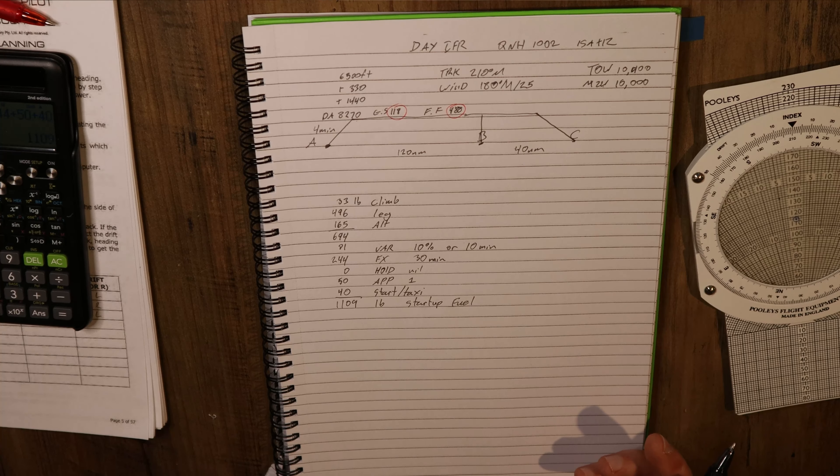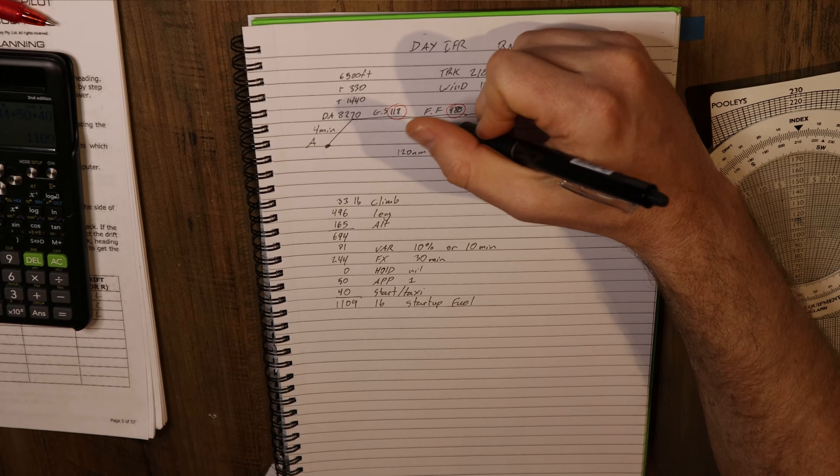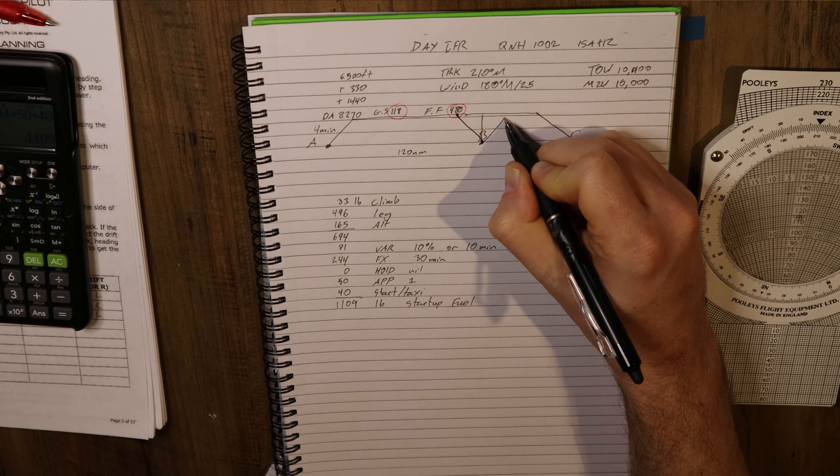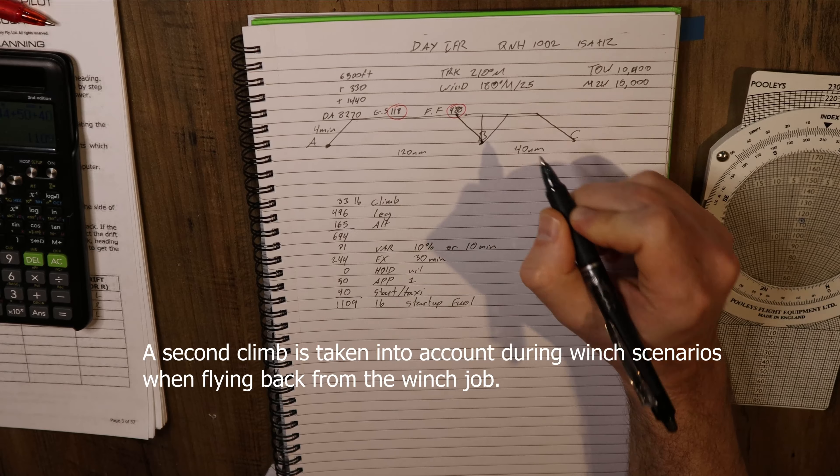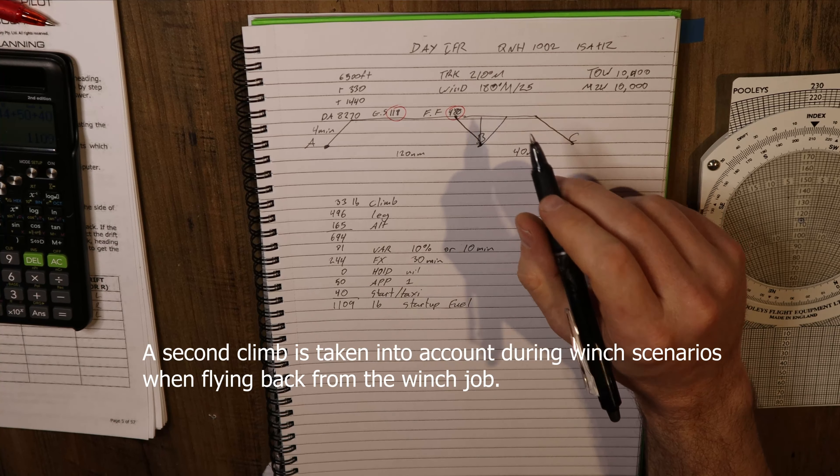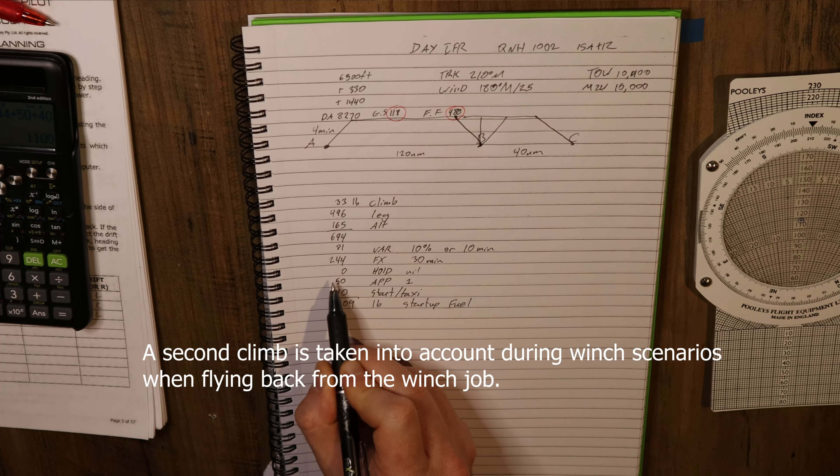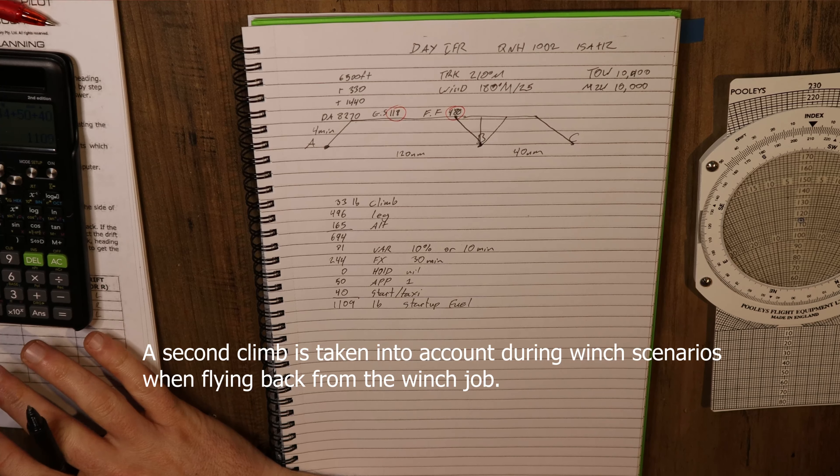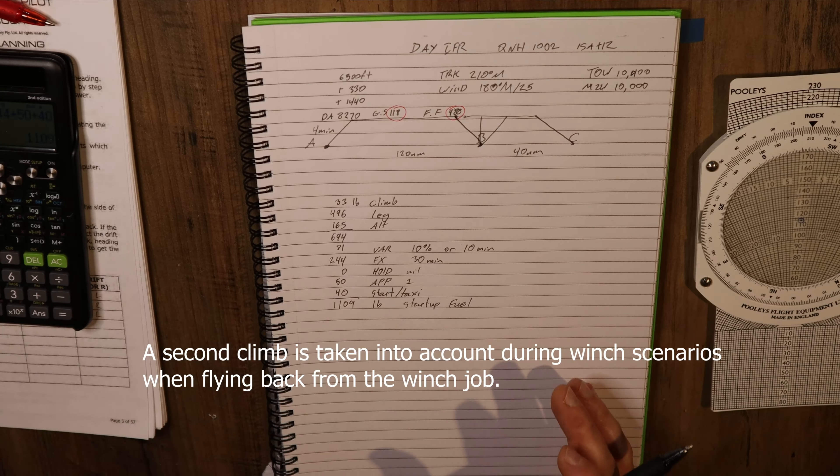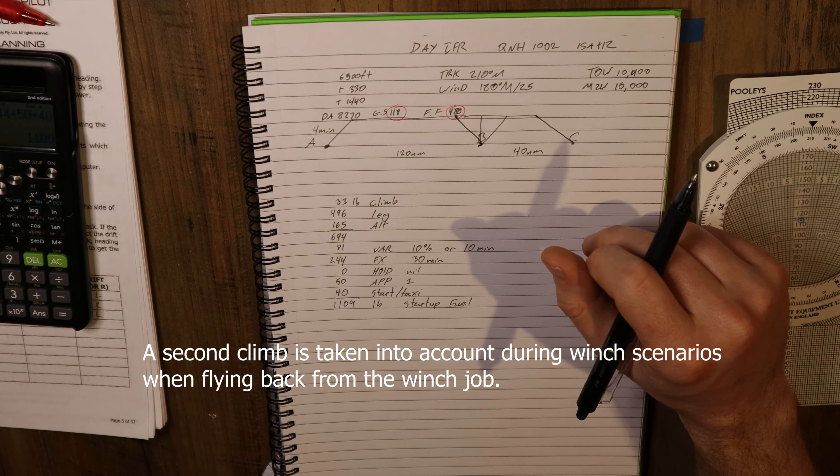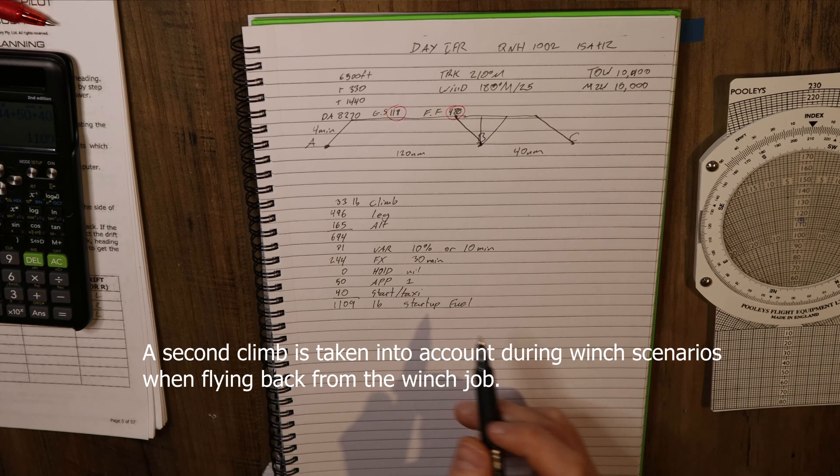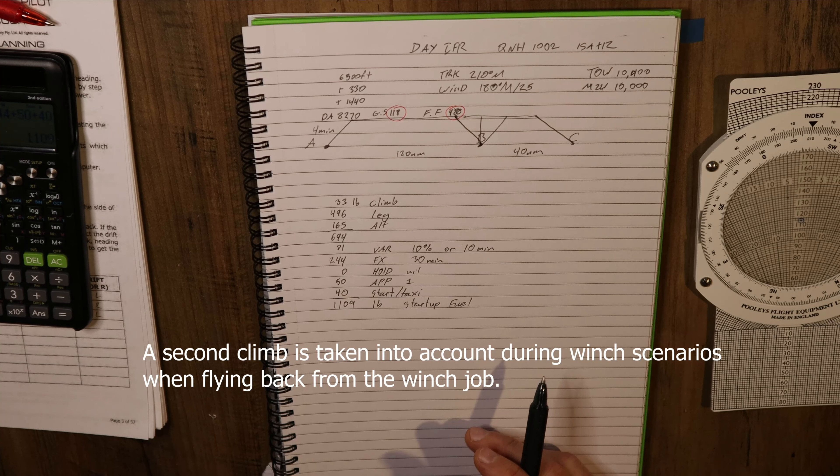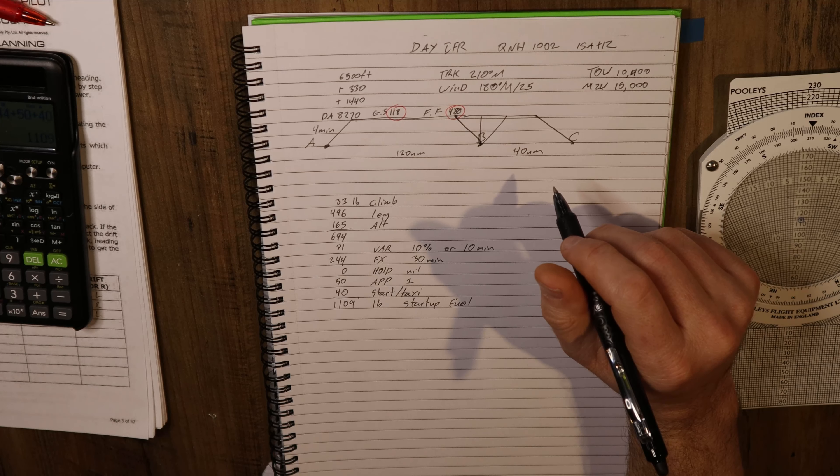One thing that's not mentioned in the training documentation, but it seems to get the correct answers, is here we're actually doing an approach. And if we go missed approach, then that's back up to another climb. But you never actually take the second climb into account back up to your 6000 feet. I think what they're doing is they are accounting for your potential climb in your approach fuel. But that's something I'm unsure about. In the Australian documentation, they don't mention that at all. And all of the correct answers do not take that second climb into account, which is odd. Maybe that comes out of the fact that your variable fuel is now changing because you're going to an alternate destination.